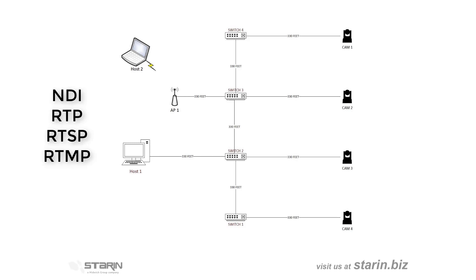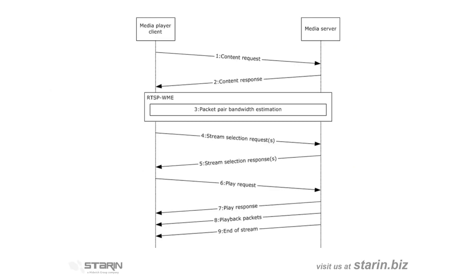This isn't just NDI either. IP streaming can be done with RTP, RTSP, and RTMP as well. They all typically run right over the top of a TCP/IP network. RTP, RTSP, and RTMP streams don't auto-locate or use zero-configuration technology — you need to manually set them up.